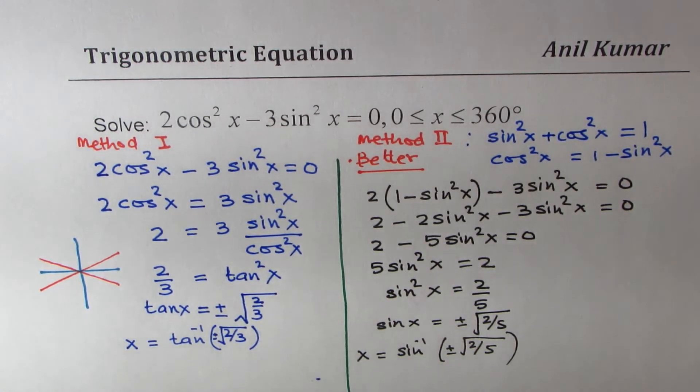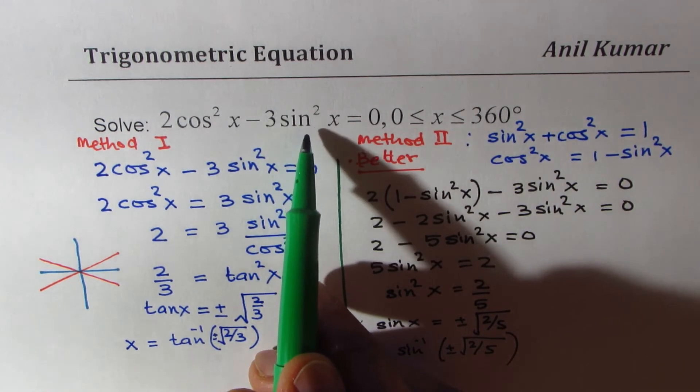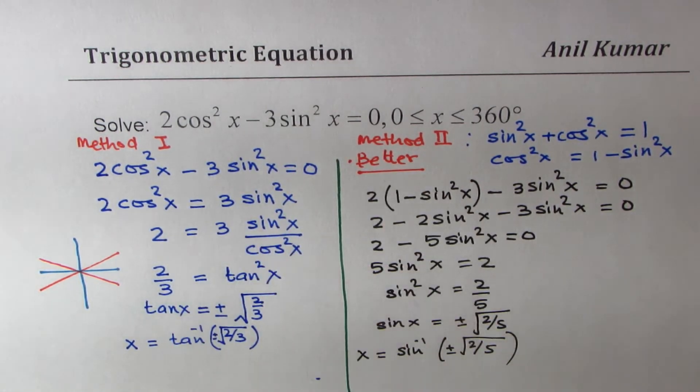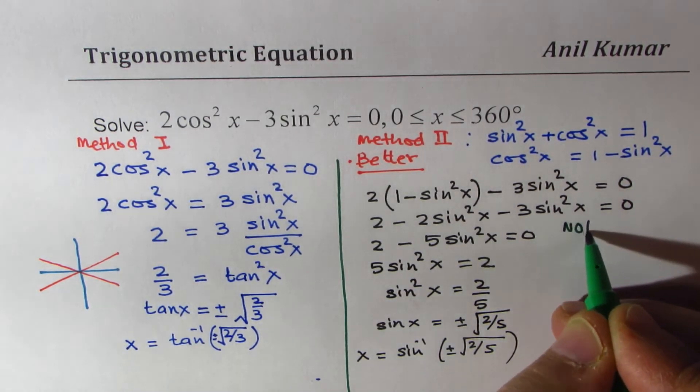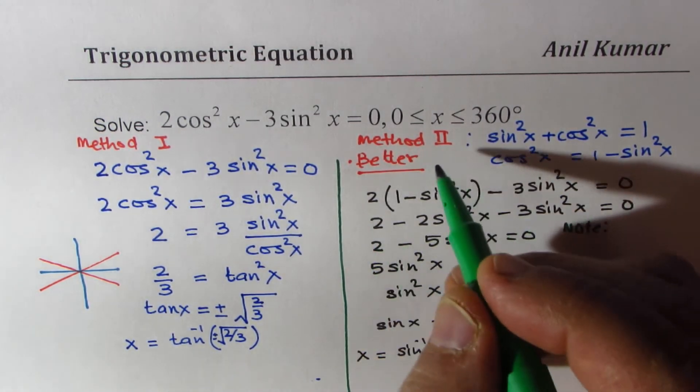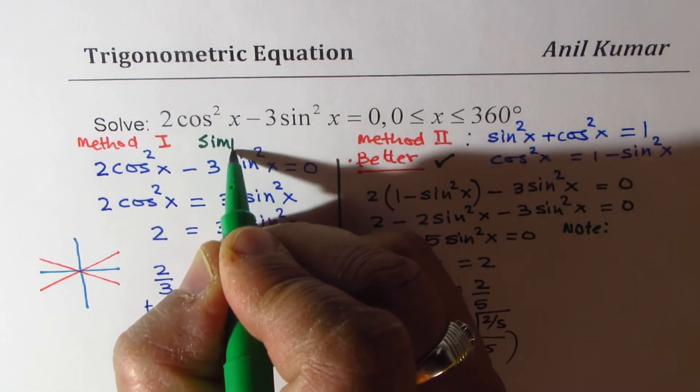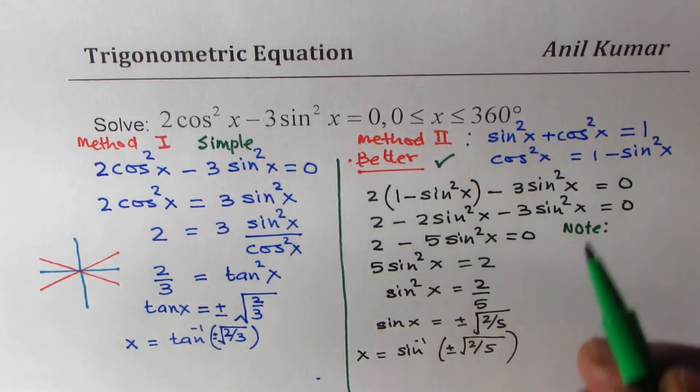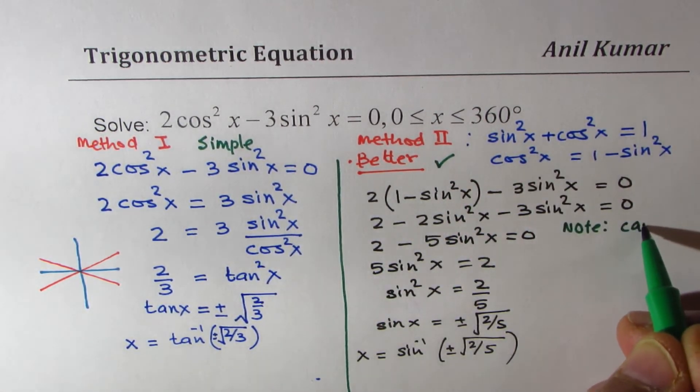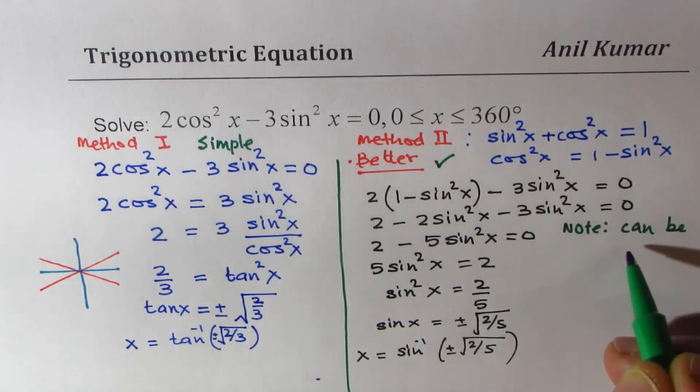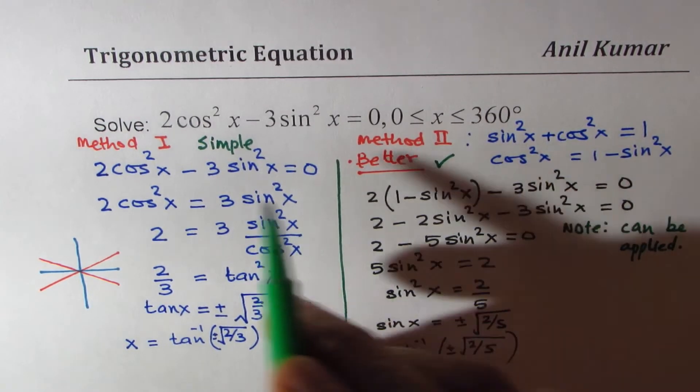Simply because it is more versatile. If I change the question, if I change sin²x with sin x, for example, then you cannot apply method 1. This is preferred. This is simple. But this can be used always. This type of strategy can be used always.